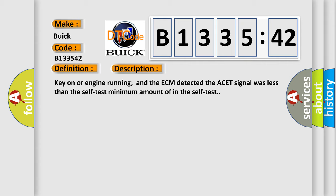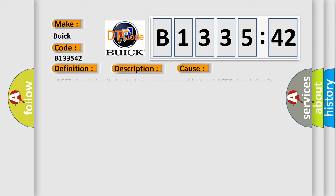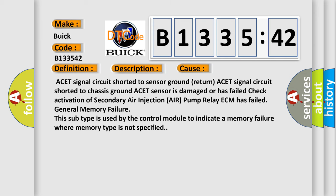And now this is a short description of this DTC code. Key on or engine running and the ECM detected the ACET signal was less than the self-test minimum amount in the self-test. This diagnostic error occurs most often in these cases.